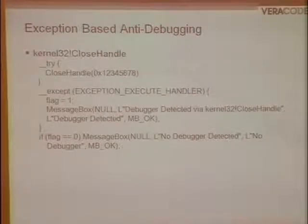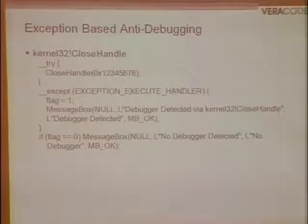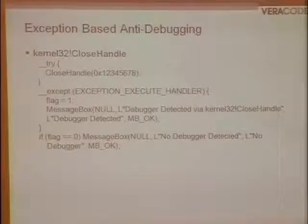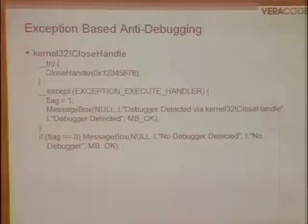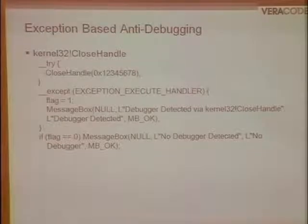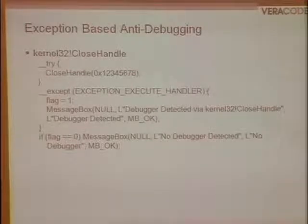Kernel32 CloseHandle: this operates in reverse from the previous methods. Calling CloseHandle with an invalid handle — like 0x12345678 — generates a STATUS_INVALID_HANDLE exception. Unlike the others, this exception is only raised if a debugger is attached to the process. So we flip the handling logic: if no debugger is attached, the call simply returns an error code and continues; if a debugger is attached, the exception is generated and trapped by the debugger.